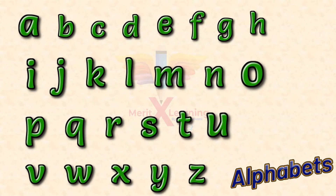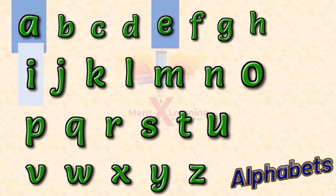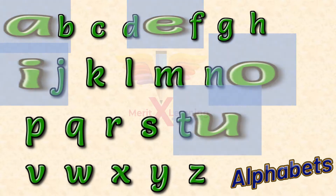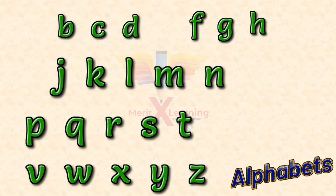Out of these 26 alphabets, there are 5 vowels. They are A, E, I, O, and U. And if we remove these 5 vowels from our alphabet list, then the remaining alphabets are our consonants.